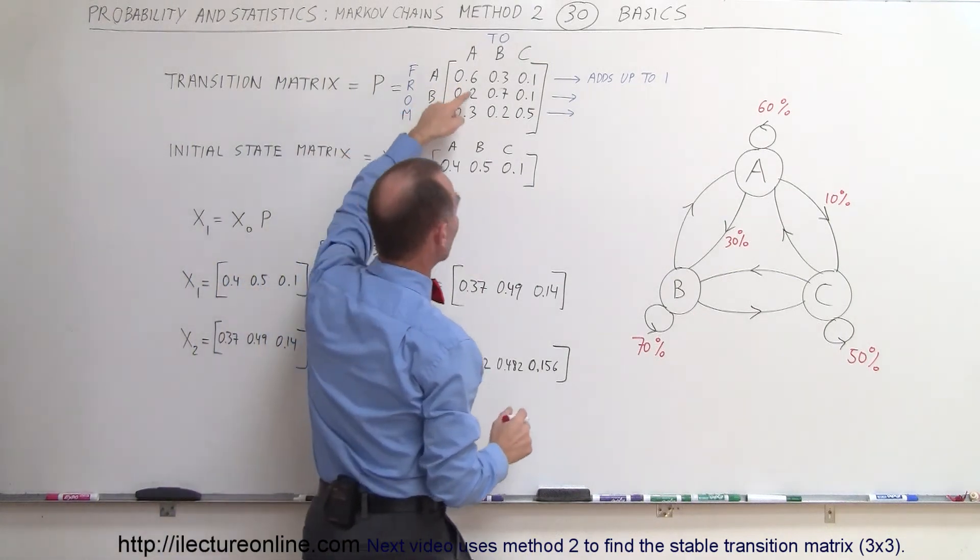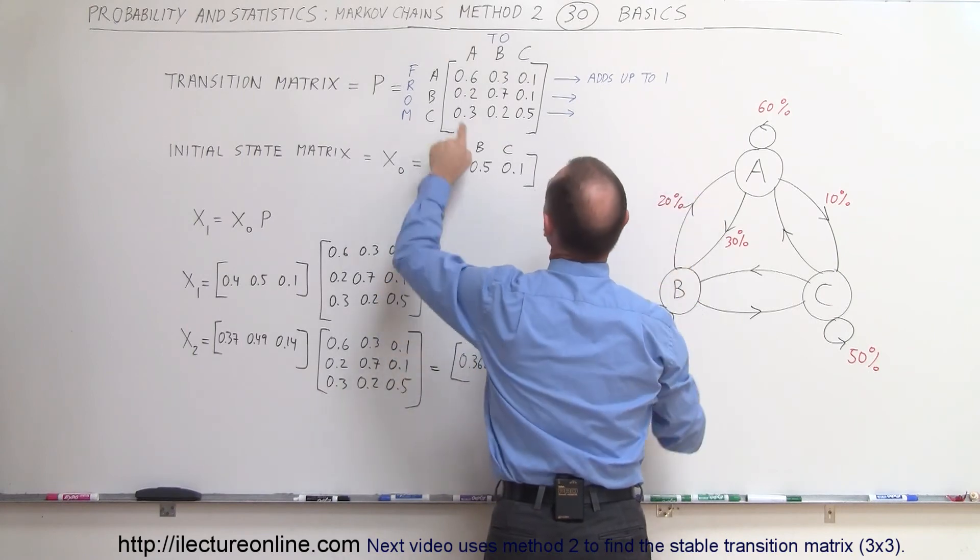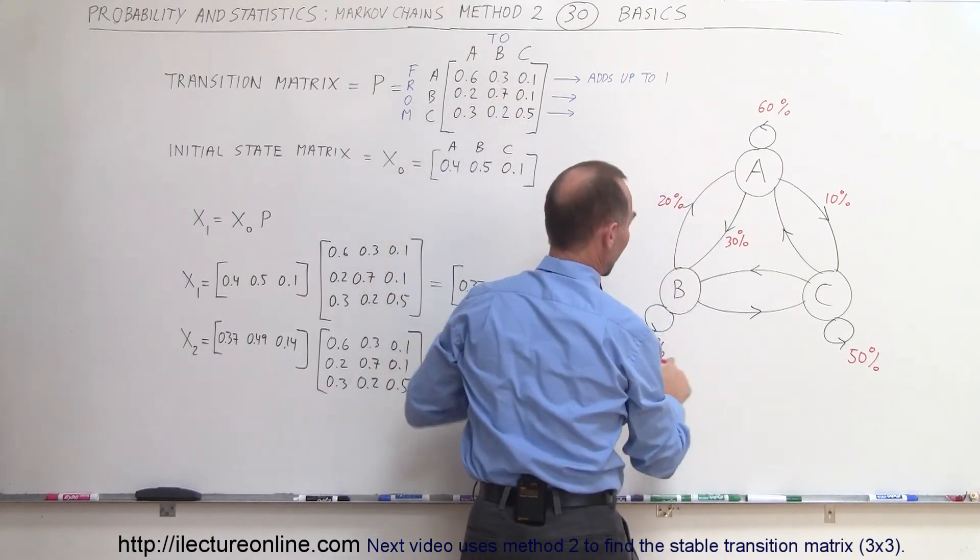Now next we do from B so from B to A so from B to A that would be 20 percent. From B to B we already have that and from B to C is 10 percent.